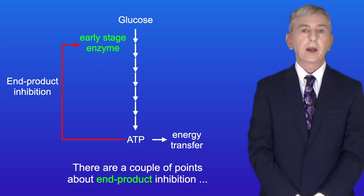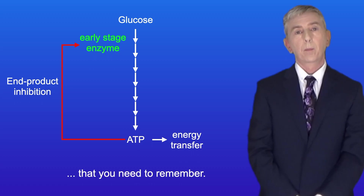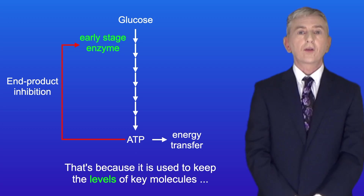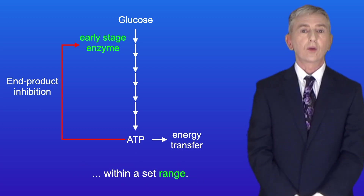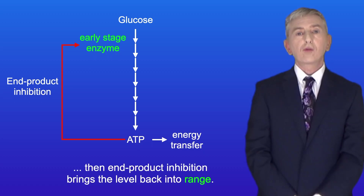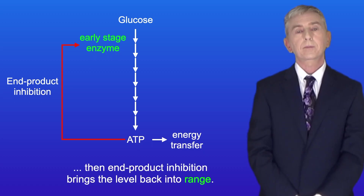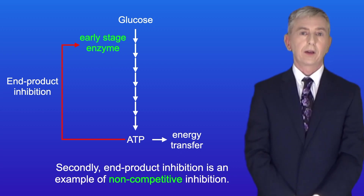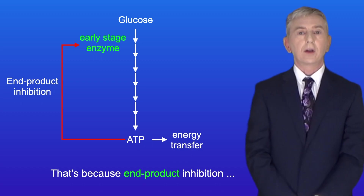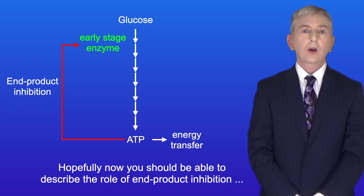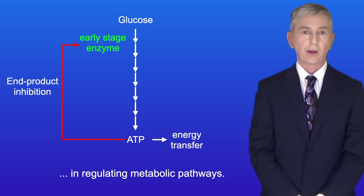There are a couple of points about end product inhibition that you need to remember. Firstly, end product inhibition is an example of negative feedback — that's because it's used to keep the levels of key molecules within a set range, and if the level varies, end product inhibition brings the level back into range. Secondly, end product inhibition is an example of non-competitive inhibition, because end product inhibition takes place through the allosteric site of the enzyme. So hopefully now you should be able to describe the role of end product inhibition in regulating metabolic pathways.